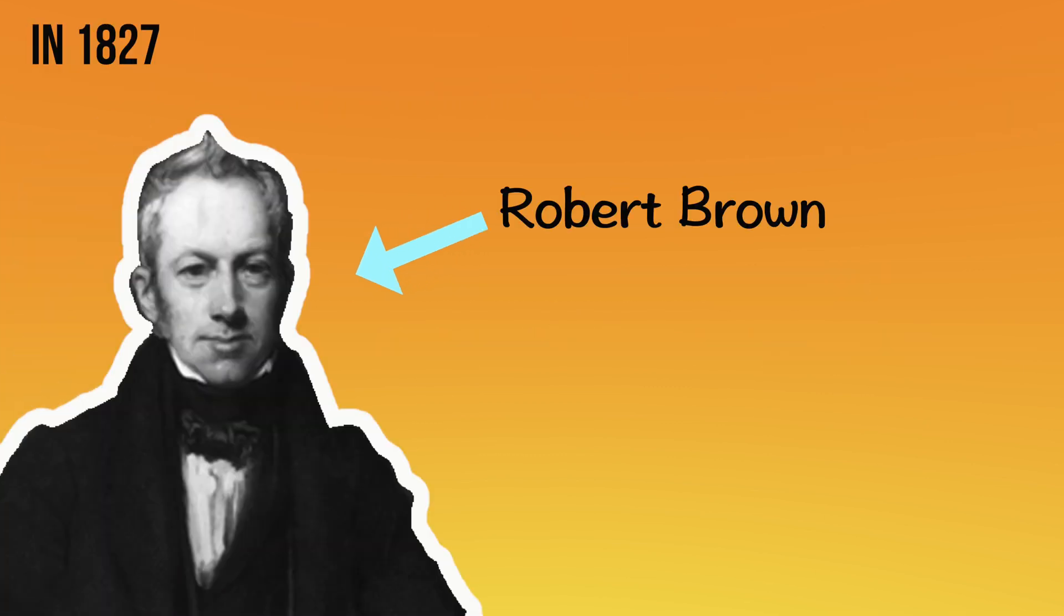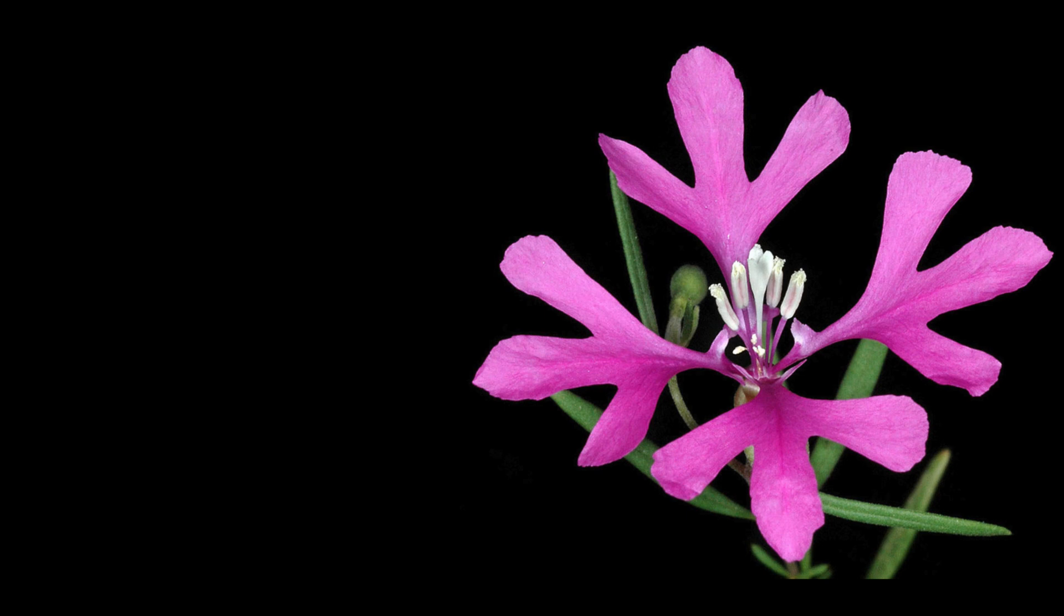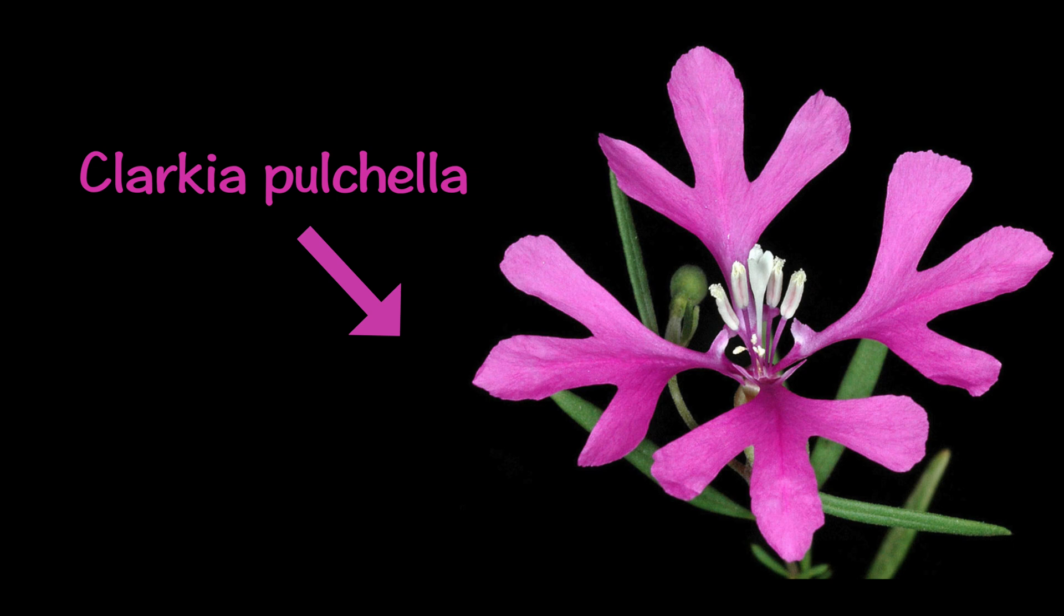In 1827, the botanist Robert Brown made observations of pollen seeds taken from a type of evening primrose called Clarkia pulcella suspended in water under the microscope.